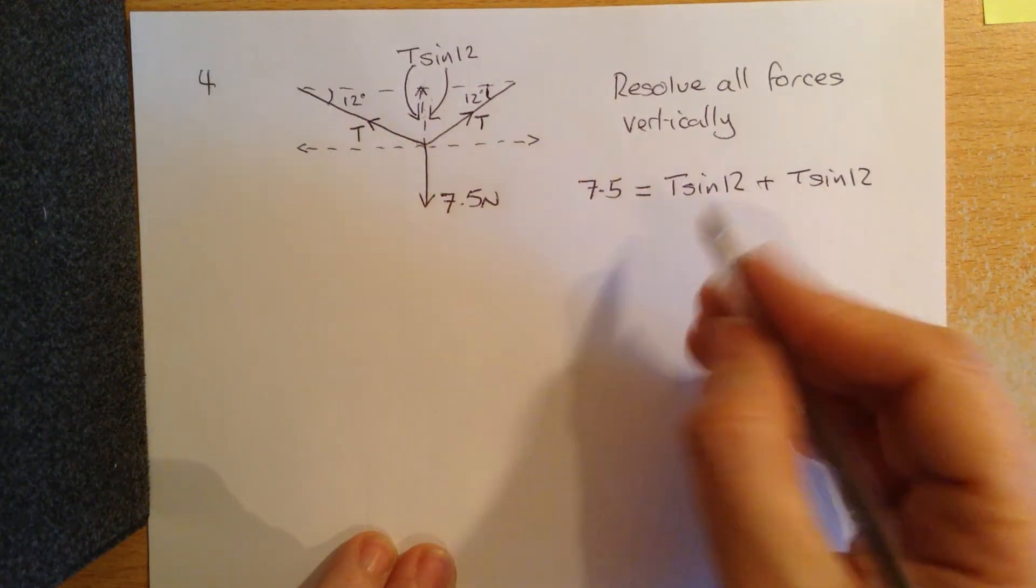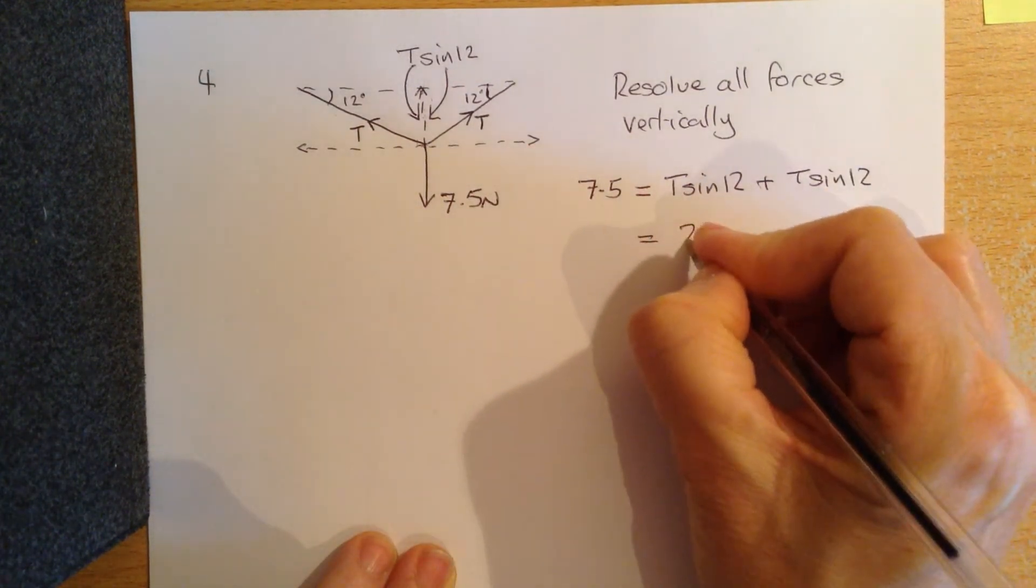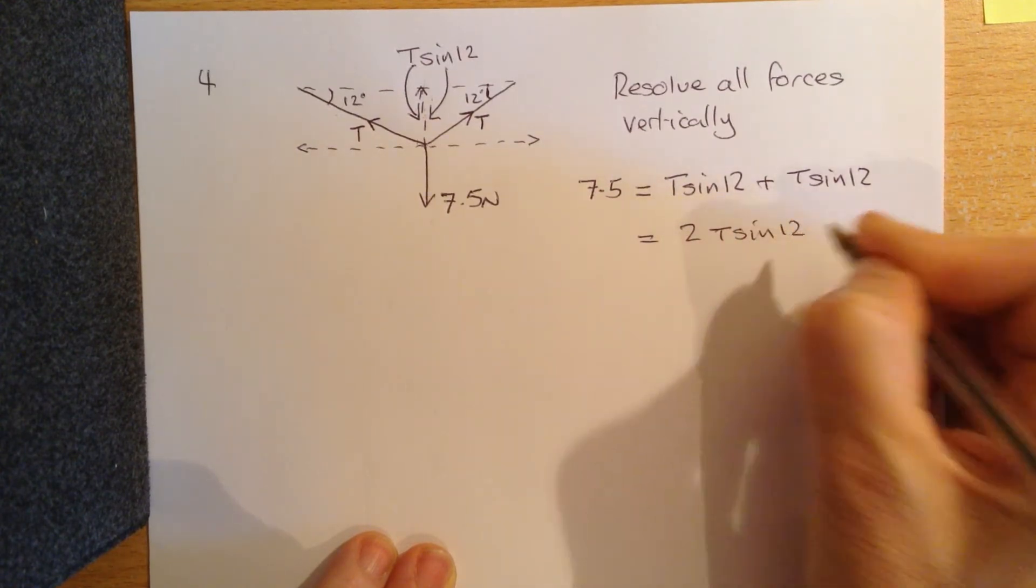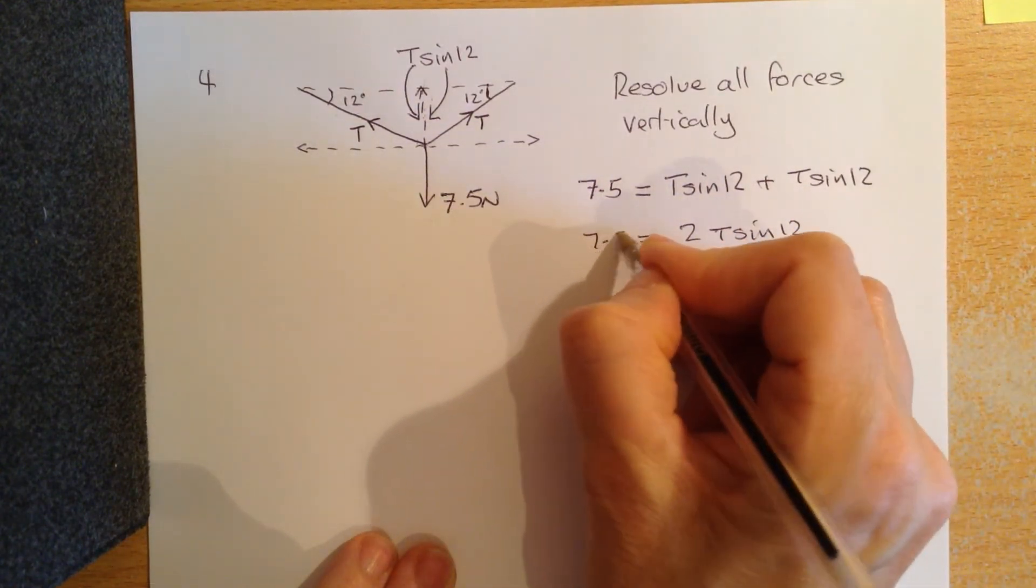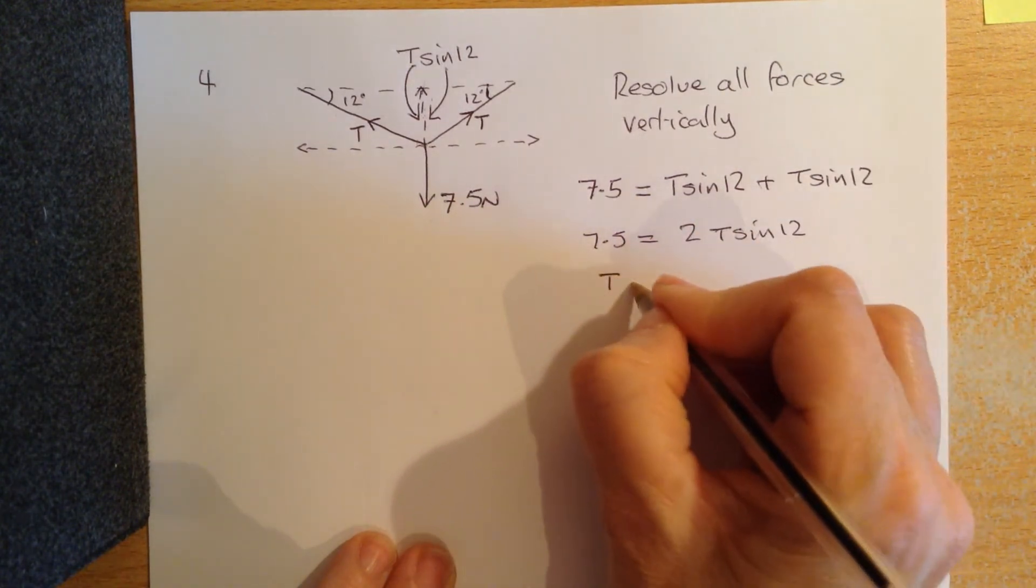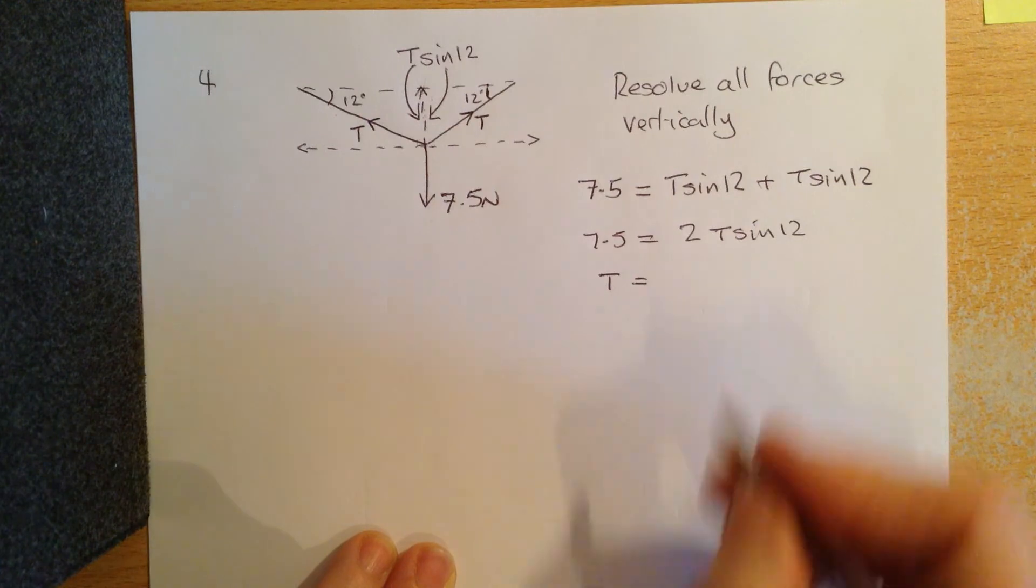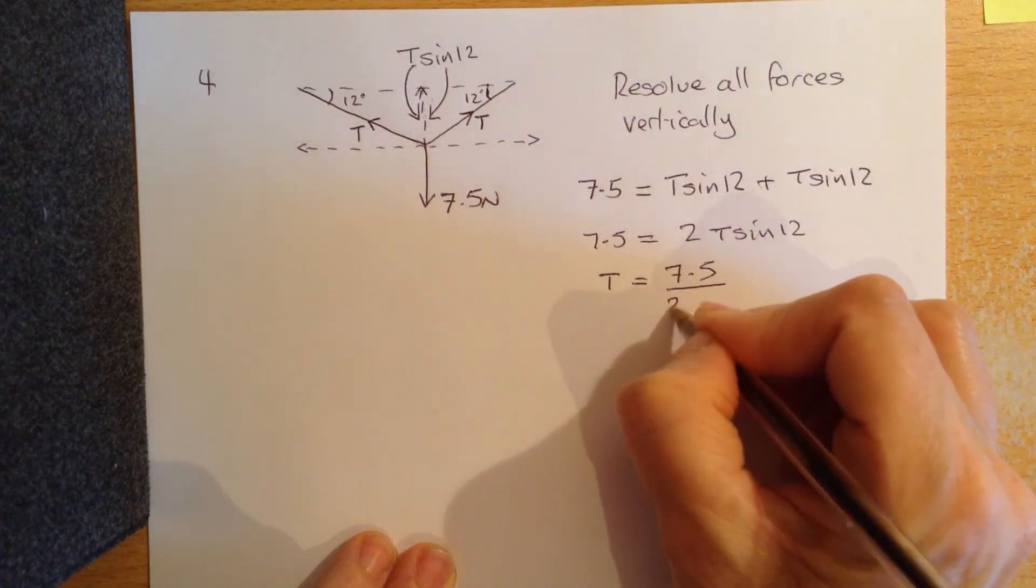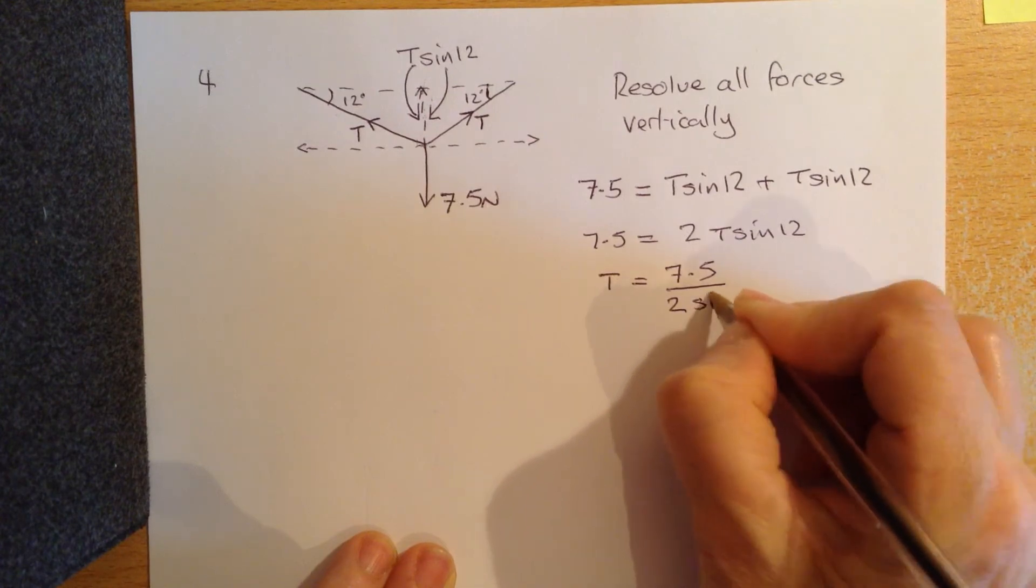We can add these two together and say that 2T sine of 12 is equal to 7.5. So if we rearrange this equation to make T the subject of the equation, we end up with 7.5 divided by 2 sine of 12.